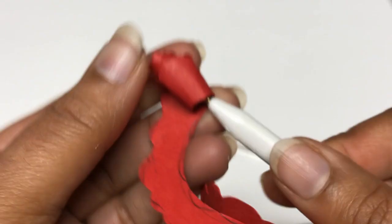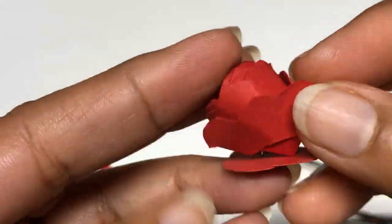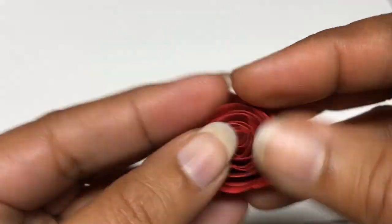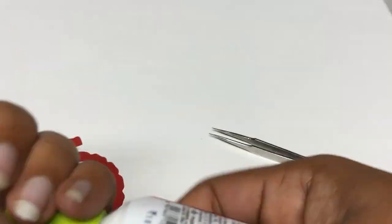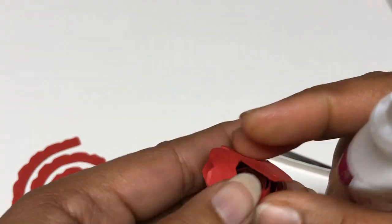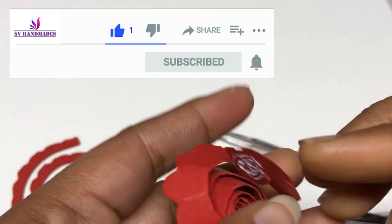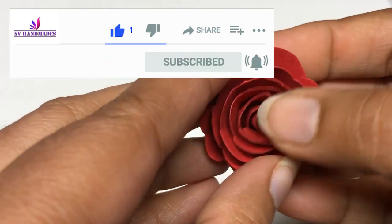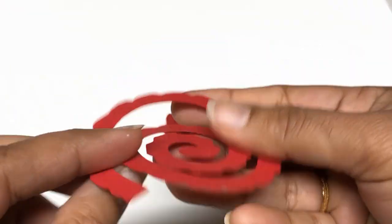So now using your quilling tool or the tweezer, you can use anything as per your wish. Tweezers will be easier to do. Then after you take it out, just shape it properly with equal spacing and then glue the bottom portion. There you have your rose.